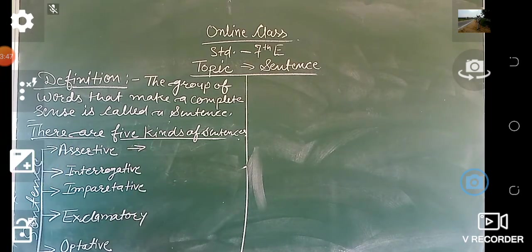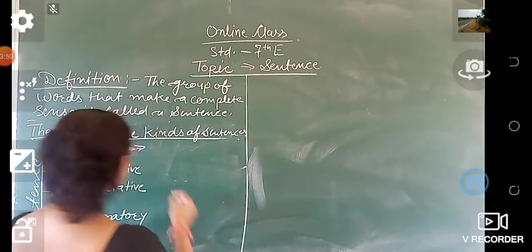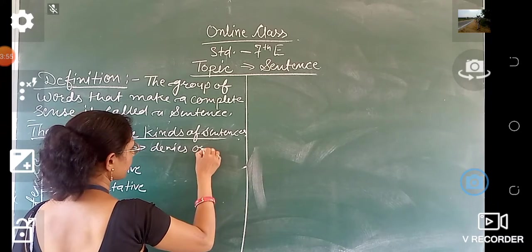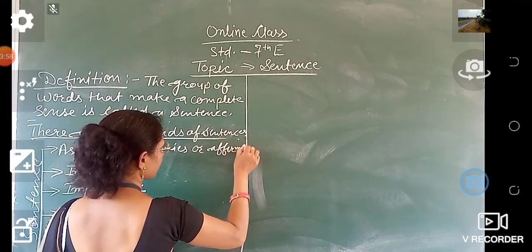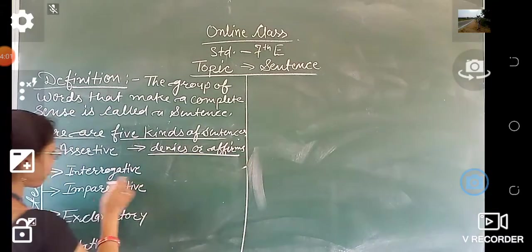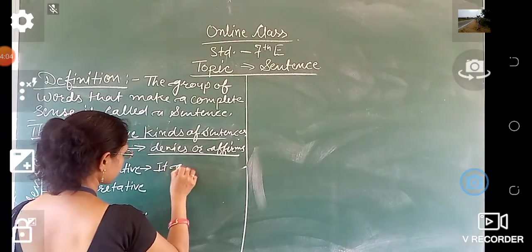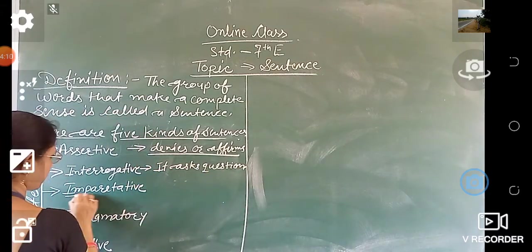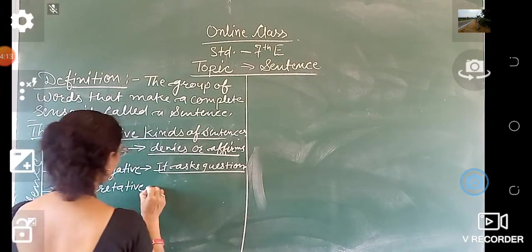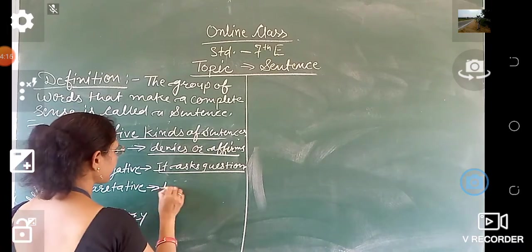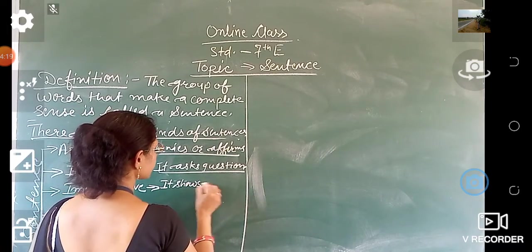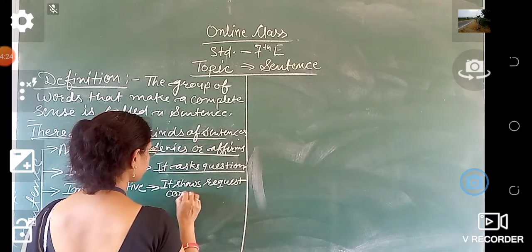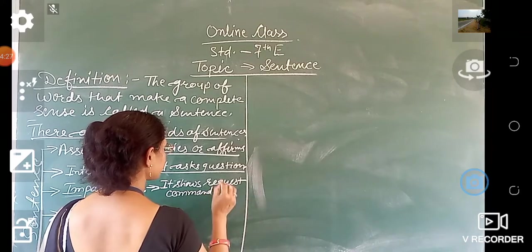What is the assertive sentence? An assertive sentence is one that denies or affirms something. What is interrogative? It asks questions. What is imperative? It shows request, command, and advice.